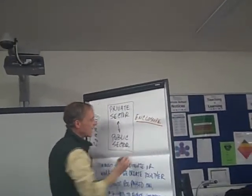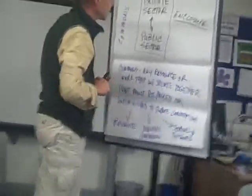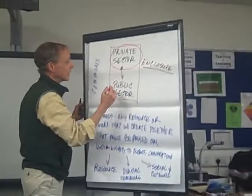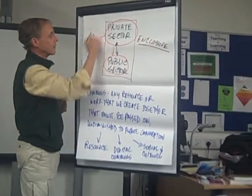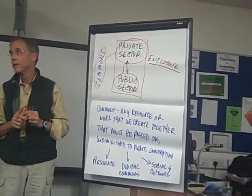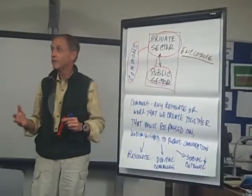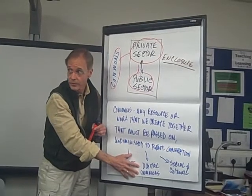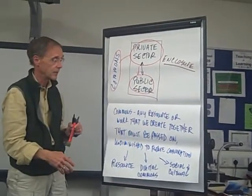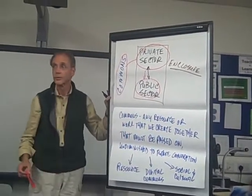Enclosure is the idea that usually the private sector, with the support usually through legislation of the public sector, is able to commodify or enclose the commons. We've certainly seen this with regard to land, and we've seen it with regard to even trying to control the internet through regulation, and in even the most bizarre ways in terms of social and cultural commons.